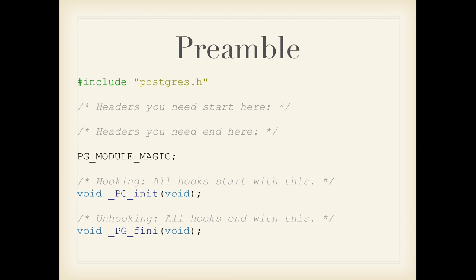There's a thing called PG_MODULE_MAGIC, which is just what it sounds like — a macro that handles all the stuff of being a module in Postgres. You don't really have to worry about the inner guts of it; other people have worked on that hard so you don't have to. But you can if you really want to. And then all hooks have to have these two functions: _PG_init and _PG_fini — the entering and the exiting of the hook code.